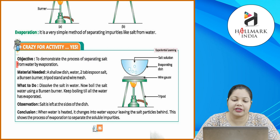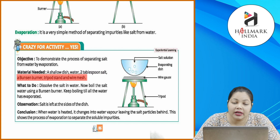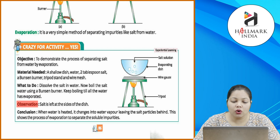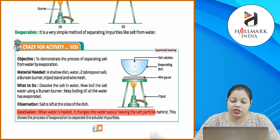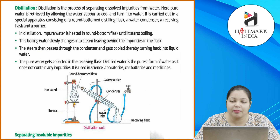Crazy for activity — objective: to demonstrate the process of separating salt from water by evaporation. Materials needed: a shallow dish, water, two tablespoons of salt, a Bunsen burner, tripod stand and wire mesh. What to do: dissolve the salt in water, now boil the salt water using a Bunsen burner, keep boiling till all the water has evaporated. Observation: salt is left at the sides of the dish. Conclusion: when water is heated, it changes into water vapor, leaving the salt particles behind — this shows the process of evaporation to separate soluble impurities.